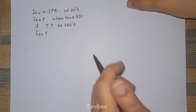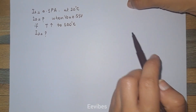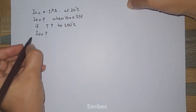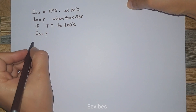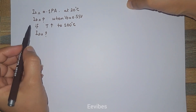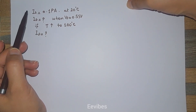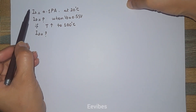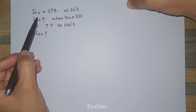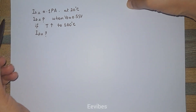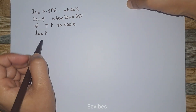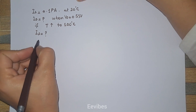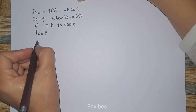Hello students, this is Asma Mastak from VEE Vibes. In this tutorial I am going to explain how the temperature affects the diode current and how the saturation current has the impact on the value of the diode current.